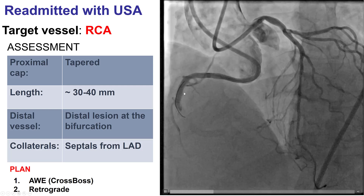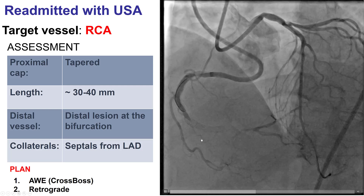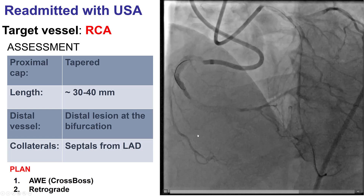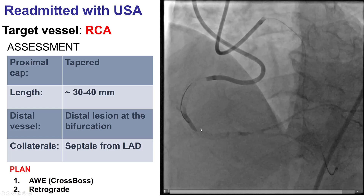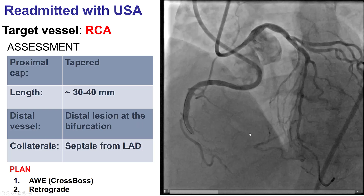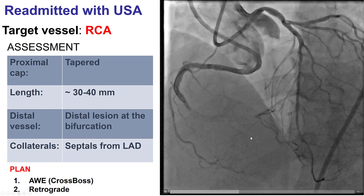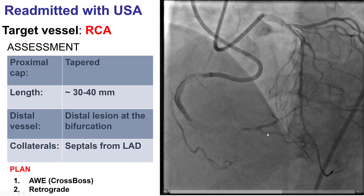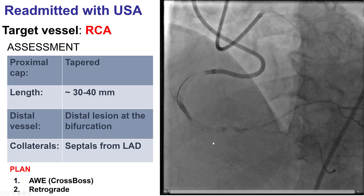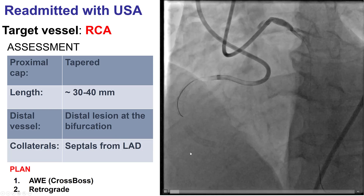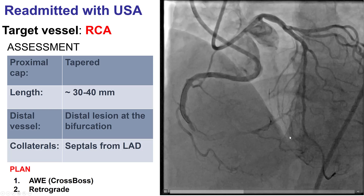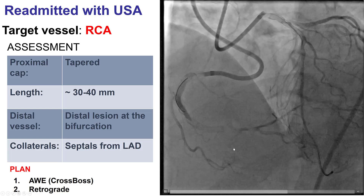What we have here is an in-stent CTO of the distal RCA. There is tapered entry into the CTO. There is a bifurcation close to the distal cap, although there is some calcification there. The length was approximately 30 to 40 millimeters, and there were septal collaterals from the LAD filling the right posterior descending artery.